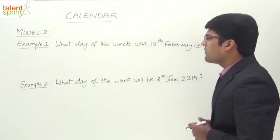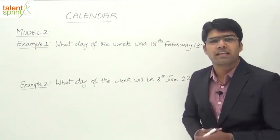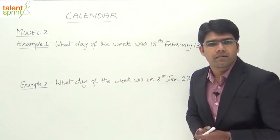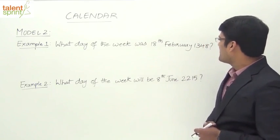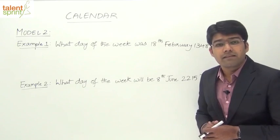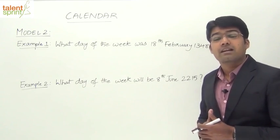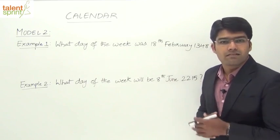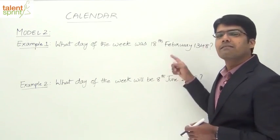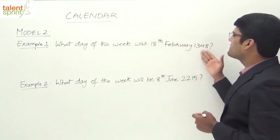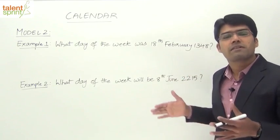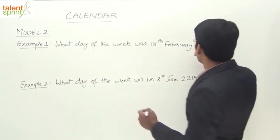The first example is: what day of the week was 18th February 1348? A very direct question with no reference date or day given. To find the day of the week, we need to calculate the number of odd days from 1st January of the first year to 18th February 1348. We split this period into parts where calculation is easy: first 1200 years, then 100 years (1201 to 1300), and so on.